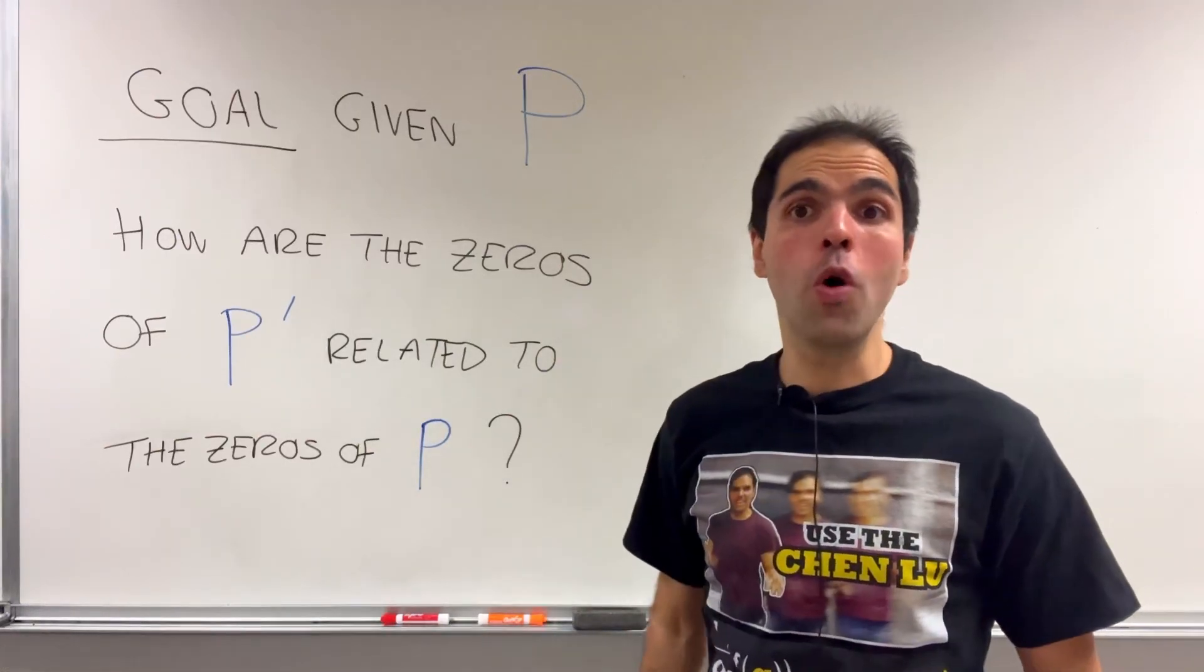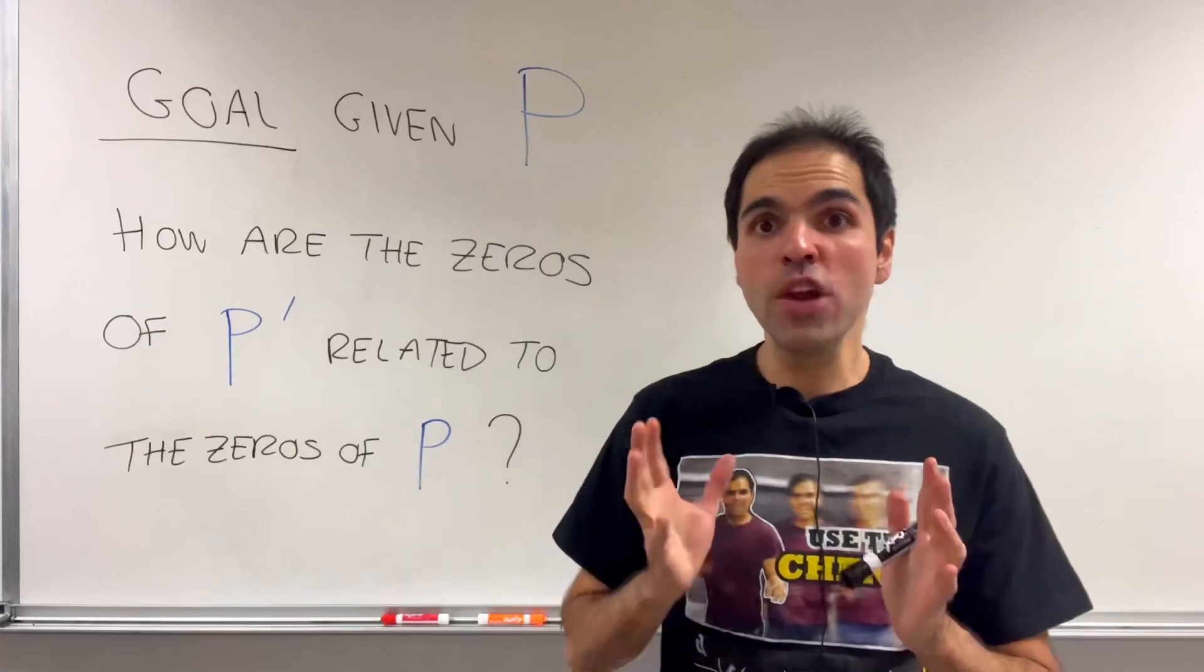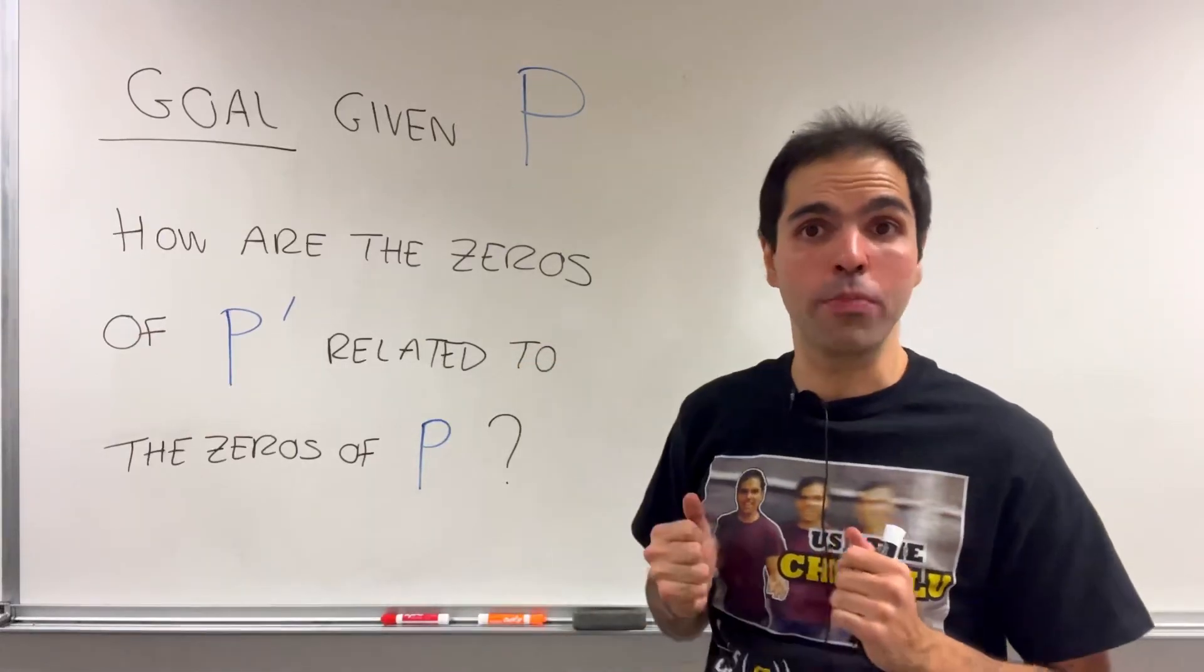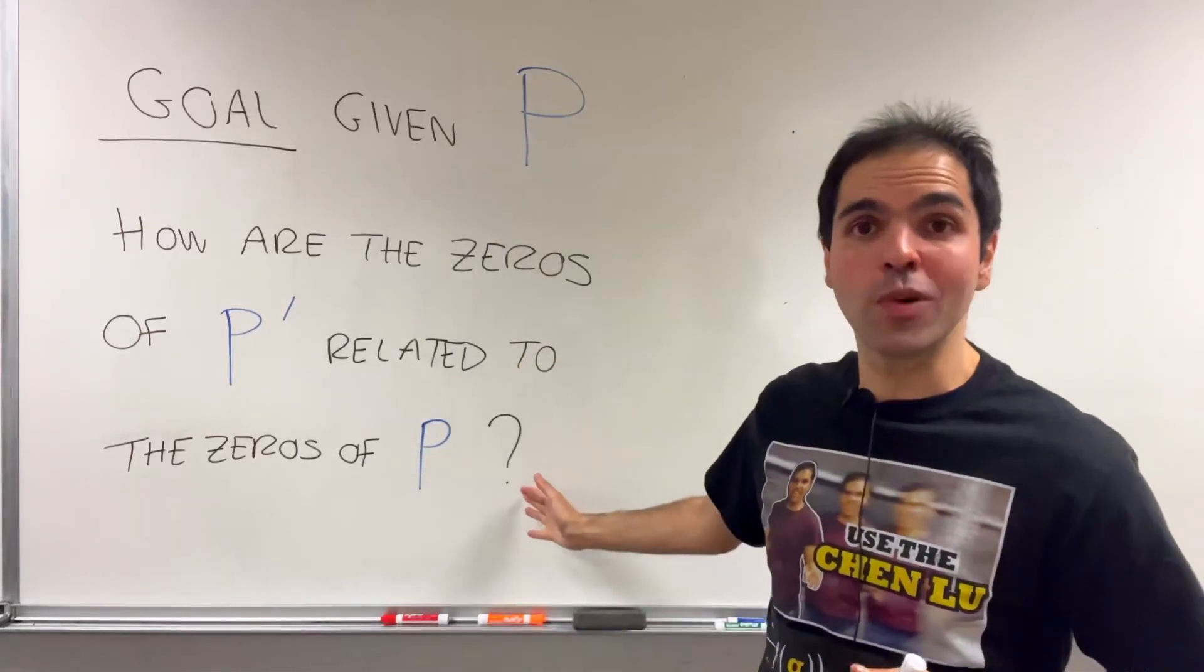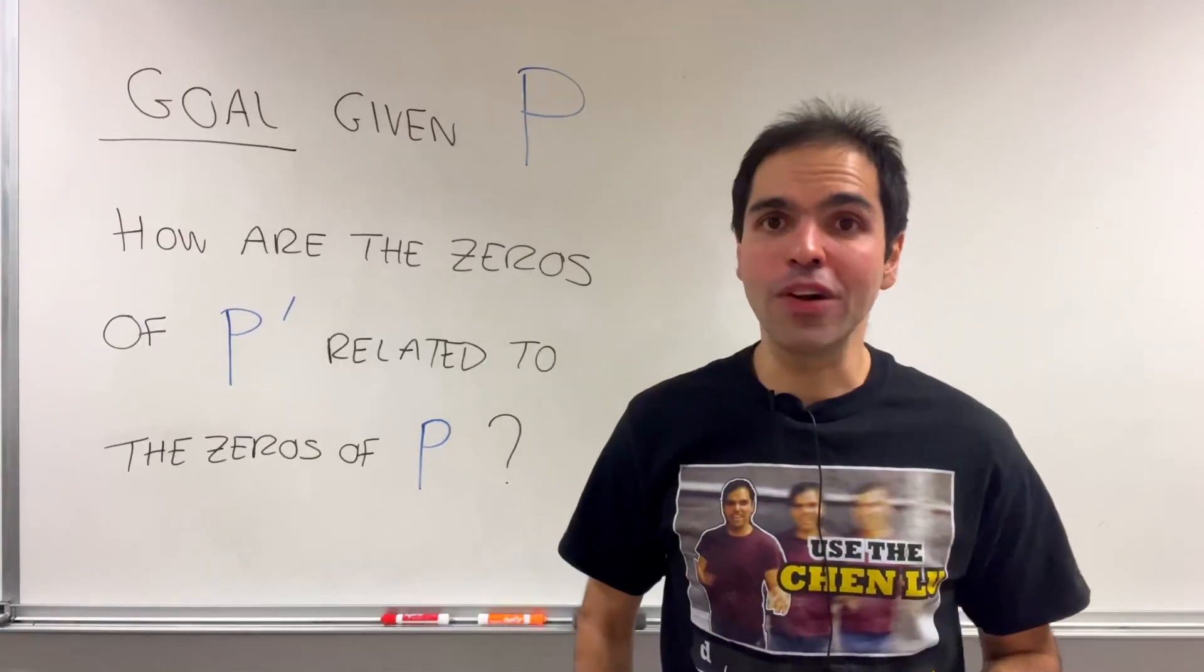Given a polynomial P, how are the zeros of the derivative P' related to the zeros of P? Watch this video and find out.